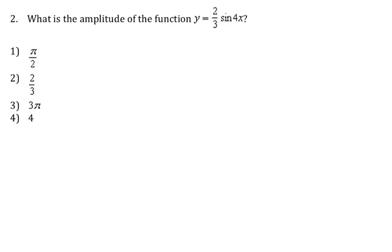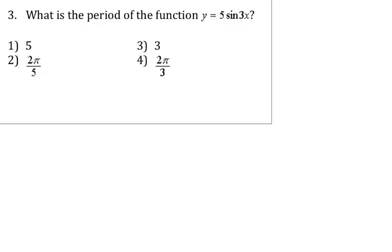Number two: what is the amplitude? In the sine and cosine function, you look at the number in front of sine. Since it's 2/3, the absolute value of 2/3 would be your amplitude.